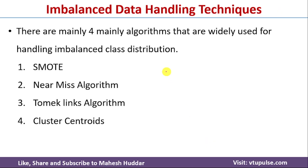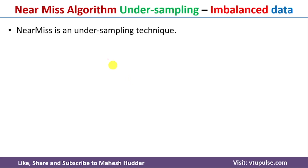In the previous video, I have already discussed what balanced and imbalanced datasets are and what problems we face with imbalanced datasets in machine learning. I have also discussed a few methods to handle imbalanced datasets. In this video, I will discuss the NearMiss algorithm, which is an undersampling technique to handle imbalanced datasets.